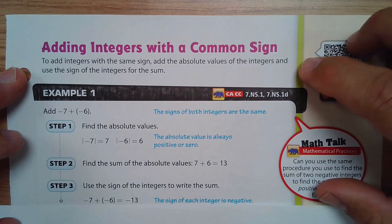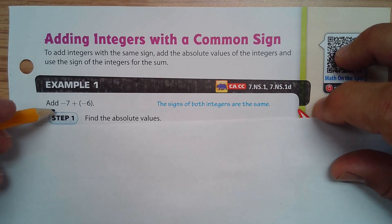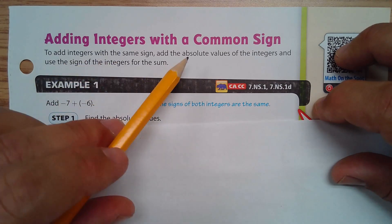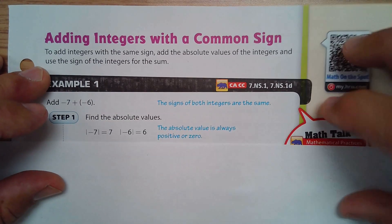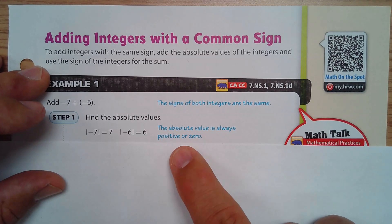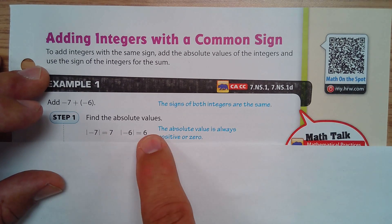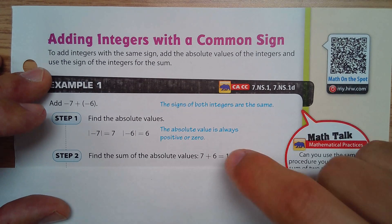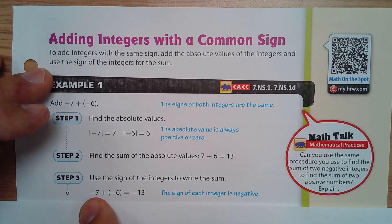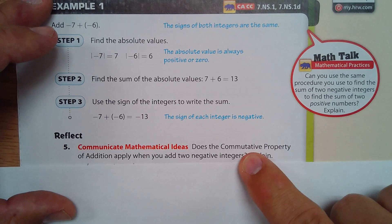Now the big idea — adding without counters. To add negative seven and negative six, take the absolute value of each number. The absolute value is always the distance to zero: the distance from negative seven to zero is seven, and from negative six to zero is six. Seven plus six is thirteen, then tack on the same sign: the answer is negative thirteen.